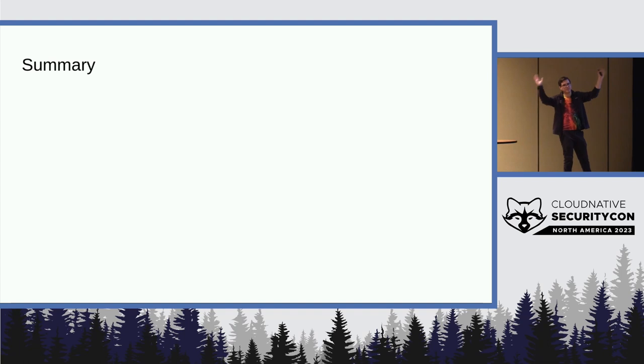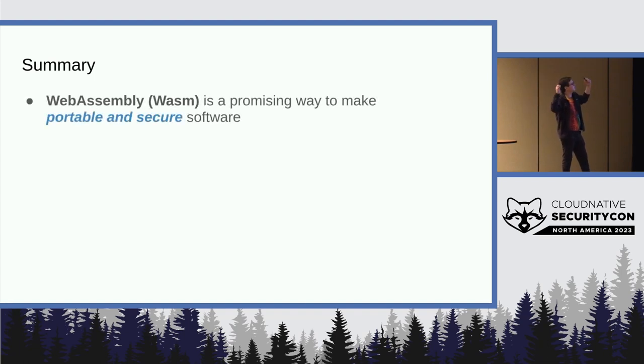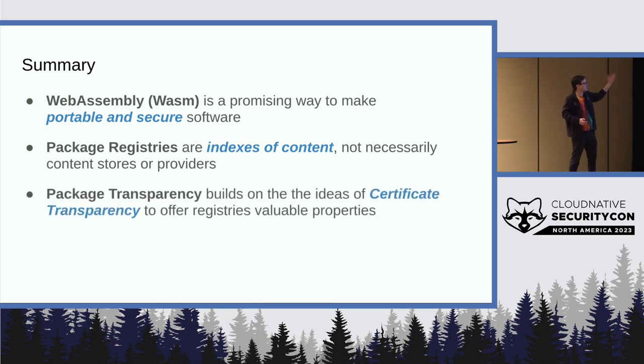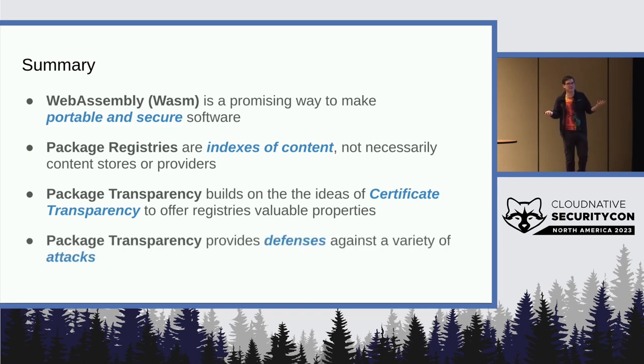So to summarize the broad points of the talk. Wasm is a promising way to make portable and secure software. Package registries, or at least the kind that we need, are really indexes of content that map name and version to what's actually there. Package transparency is this combination of certificate transparency and package concepts. And it helps us provide some really interesting defenses against different kinds of attacks.